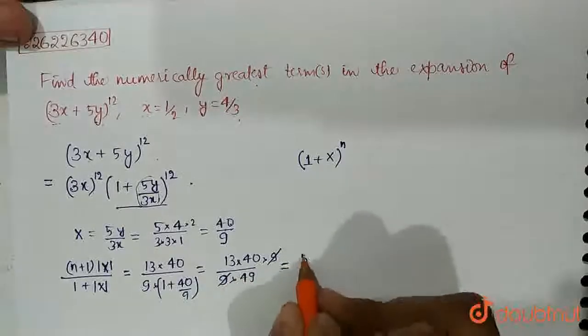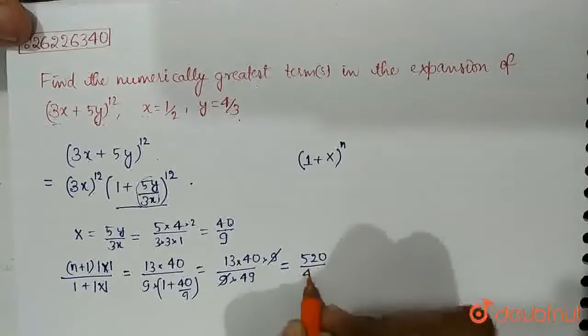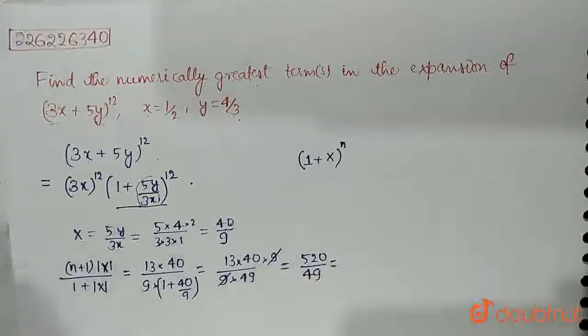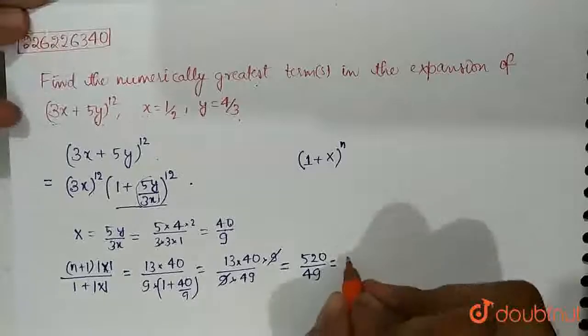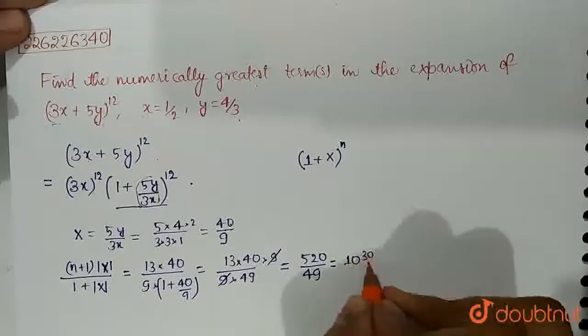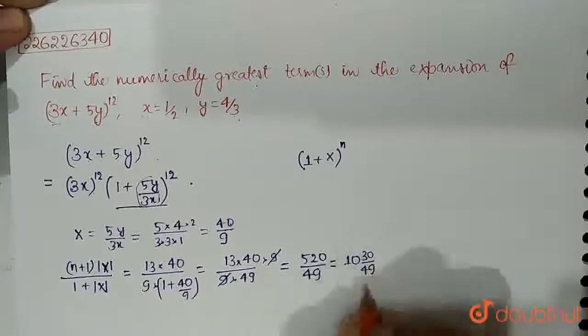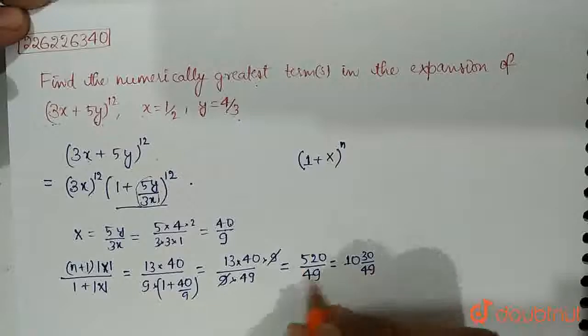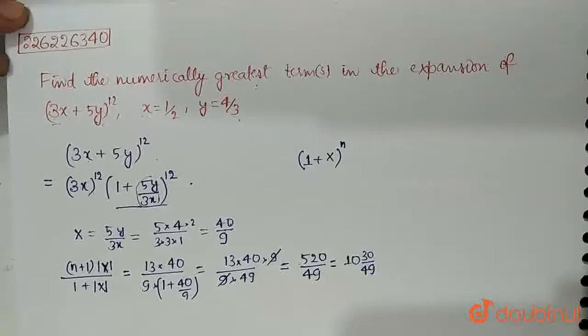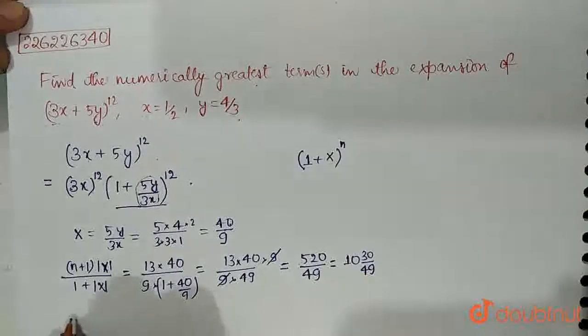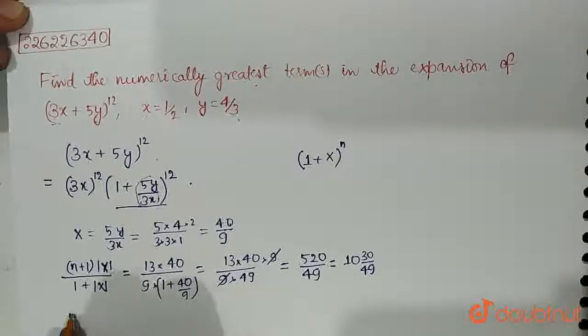520 upon 49 which in mixed fraction becomes 10 and 30 upon 49.